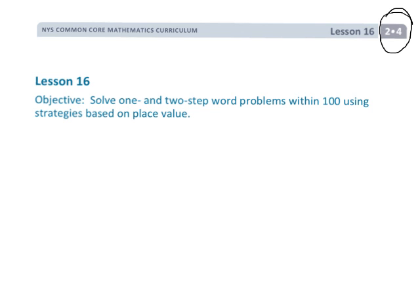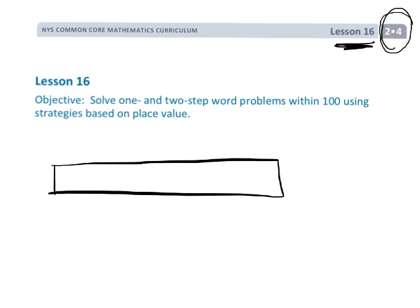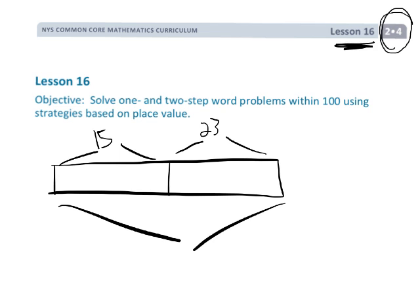This is second grade module 4 lesson 16. In this video we're going to be using tape diagrams to model addition and subtraction problems, like 15 and 23 equals question mark. Some teachers might call this a part-part-whole model, others might call this the Singapore bar model. We're going to call it the tape diagram because that's what the Common Core standards say to call it. The name isn't all that important. What is important is that research is showing it's super effective in helping students understand the mathematics they're doing.